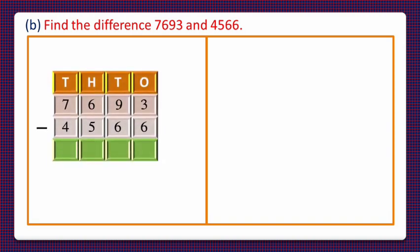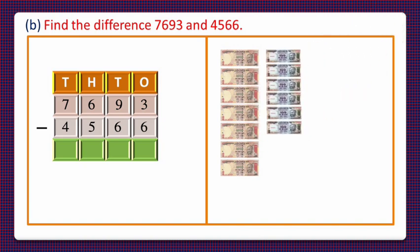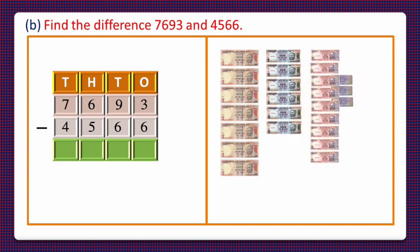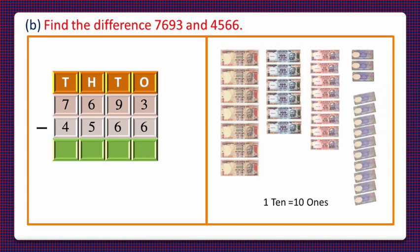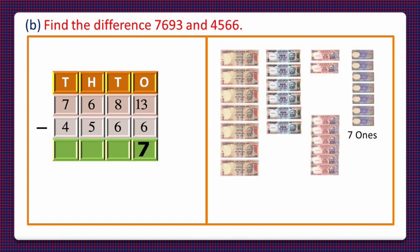Dear students, let's take the currency notes for 7693: 7000 rupee notes, 600 rupee notes, 9 ten-rupee notes, and 3 one-rupee notes. Since we can't subtract 6 from 3, we'll convert 1 ten-rupee note into 10 one-rupee notes. Now we have 13 ones and the tens reduce from 9 to 8. On removing 6 ones from 13 ones, we are left with 7 ones, which we write in the ones column. On removing 6 tens from 8 tens, we are left with 2 tens, written in the tens column.